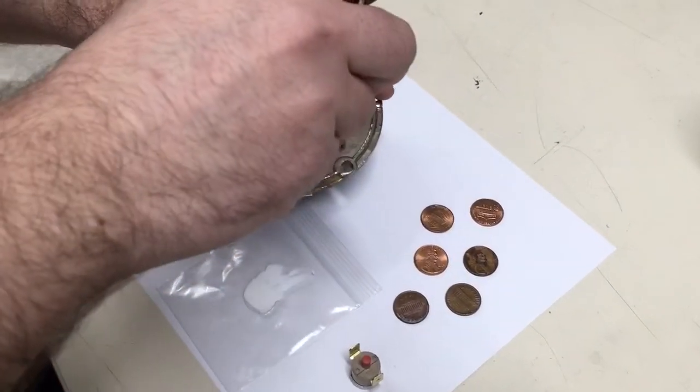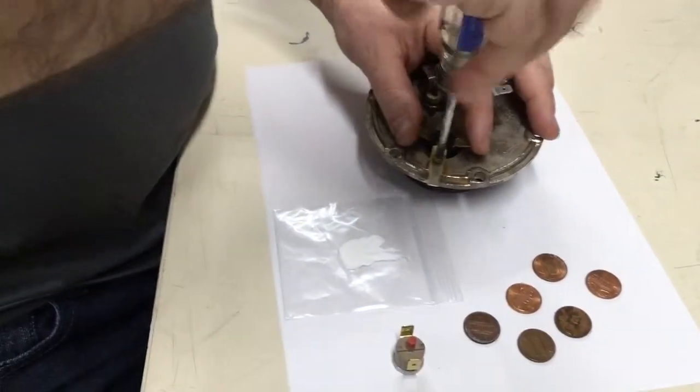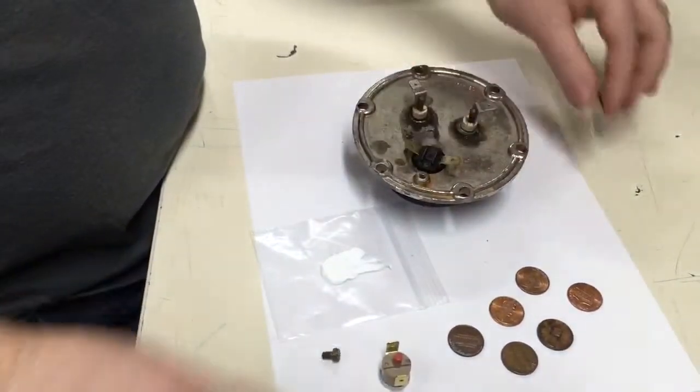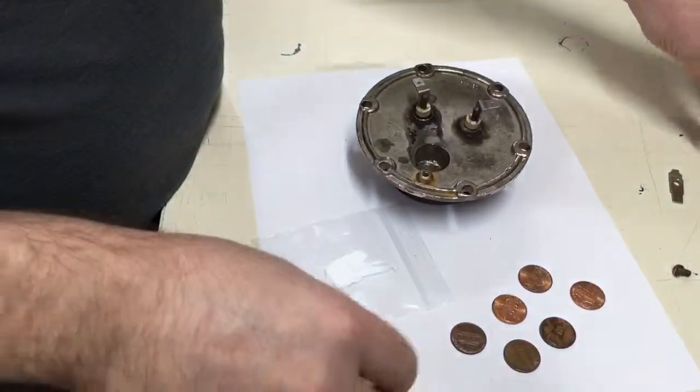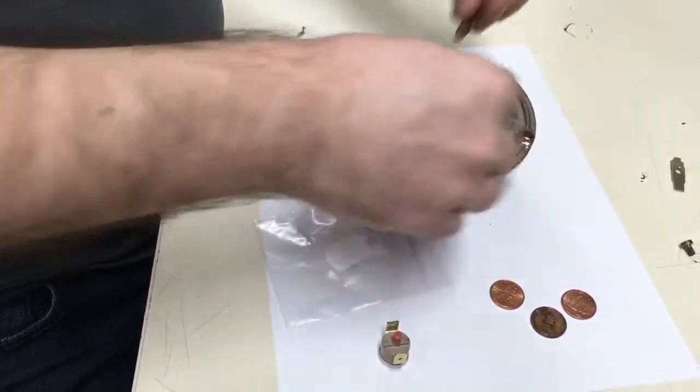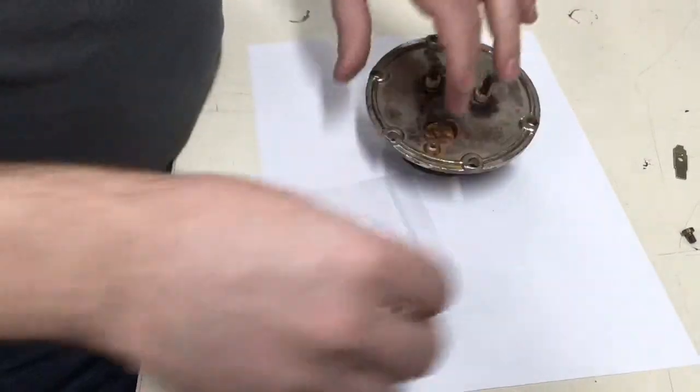All right, so we're going to remove the black thermostat. Put the pennies inside. Normally we'd put thermal paste between these pennies as well.